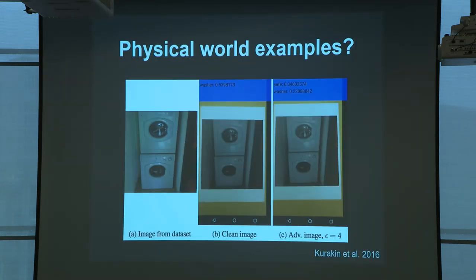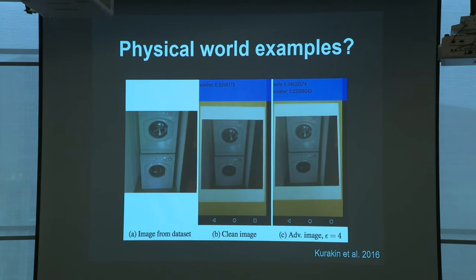One natural question is whether these examples translate to real-world settings. Work by Kurakin et al. in 2016 printed these images onto sheets of paper and checked whether classifying with a phone camera still yields adversarial results given lighting conditions and camera sensor noise. The answer was yes. This was preliminary work translating adversarial examples to the real world.